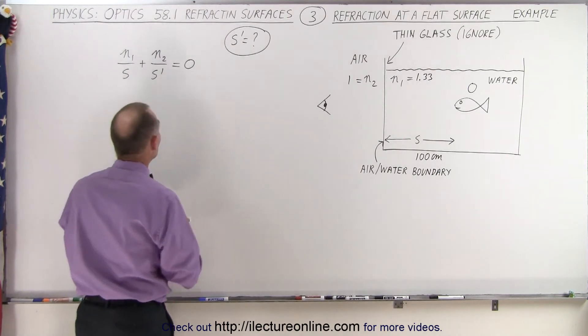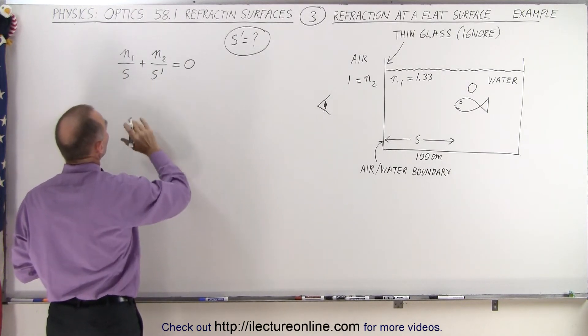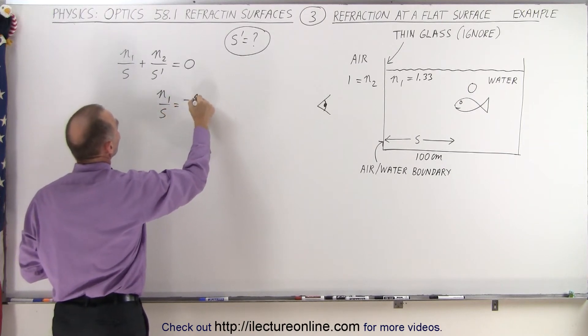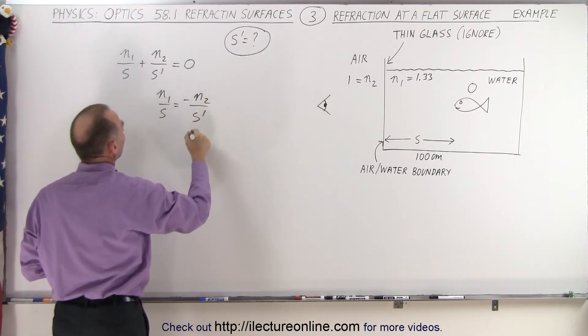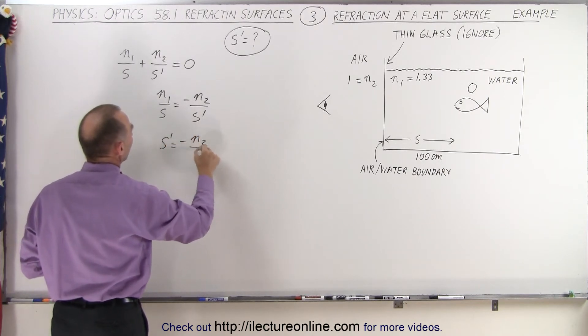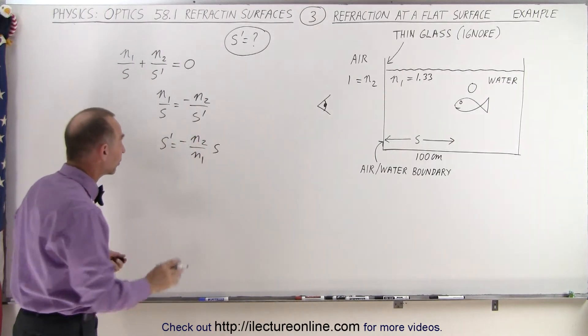So what we're going to do here is use this equation and plug in the numbers. Well, first we're going to solve for S prime. That means that N1 over S is equal to minus N2 over S prime. Moving that over here, we have S prime is equal to minus N2 over N1 times S.